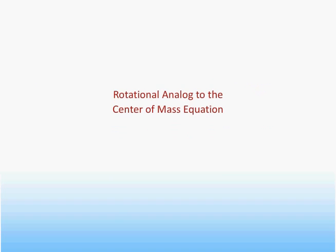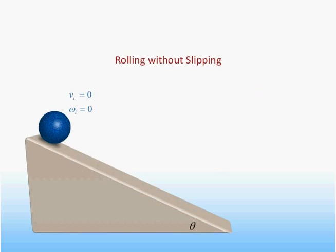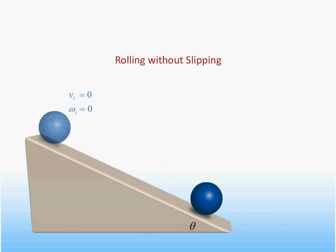Namely, we will find that the change in the rotational kinetic energy is determined by the integral of the torque over the angular displacement. We will close by examining in detail the motion of a ball rolling without slipping down a ramp.